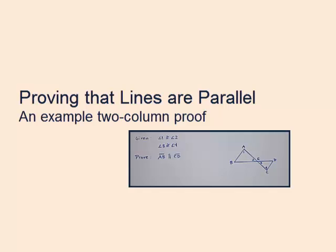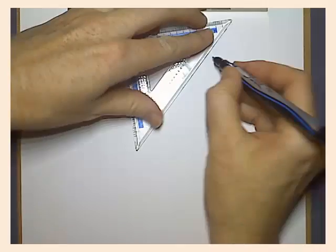Proving that lines are parallel is pretty straightforward, so long as you are organized and remember your postulates, properties, theorems, and everything else.